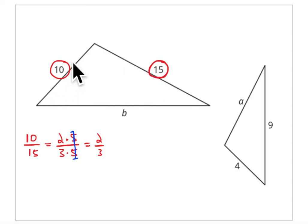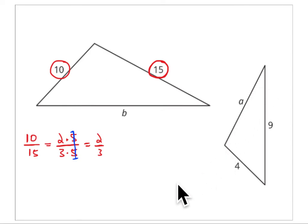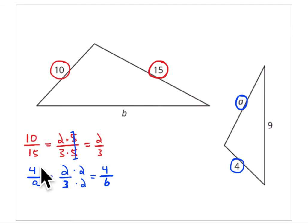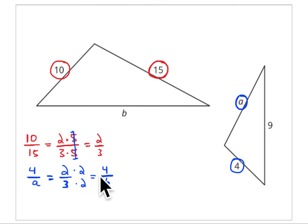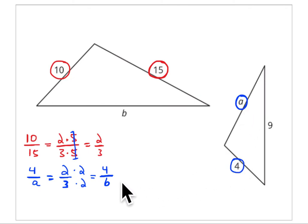10 is two-thirds the length of 15. That means that 4 is two-thirds the length of A. If you write down that ratio, 4 to A is the same as 2/3. To get to 4, you multiply 2 times 2 to get 4. That means you multiply 2 times 3 to get 6. The value of A is 6, because 4 is two-thirds of 6.